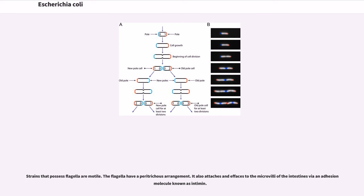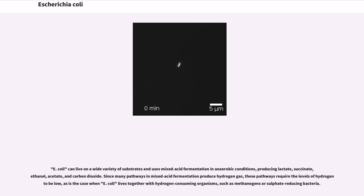E. coli strains that possess flagella are motile. The flagella have a peritrichous arrangement. It also attaches and effaces to the microvilli of the intestines via an adhesion molecule known as intimin. E. coli can live on a wide variety of substrates and uses mixed-acid fermentation in anaerobic conditions, producing lactate, succinate, ethanol, acetate, and carbon dioxide.